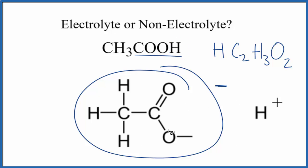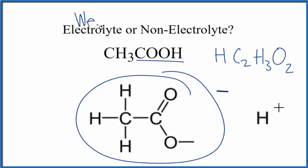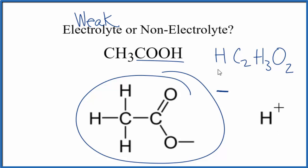However, only a small portion of the acetic acid molecules ionize, which makes it a weak electrolyte. It's also considered a weak acid because it produces the hydrogen ion H+. Having H+ is what makes something an acid, but again, it's a weak acid.